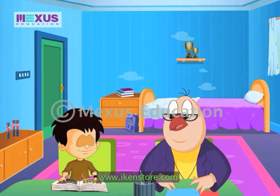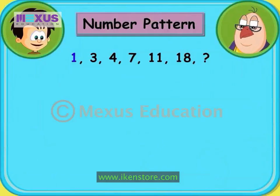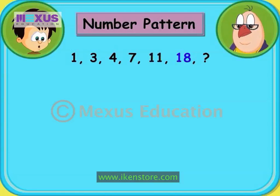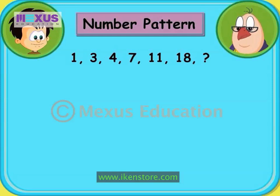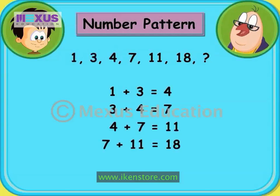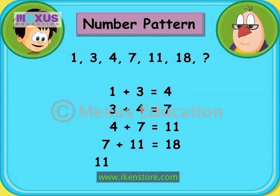Let's try another pattern: 1, 3, 4, 7, 11, 18. Now this looks tricky. Here's how — we add the previous number to the current number to get the next number. So what's the next number after 18? The next number is 11 plus 18, which equals 29.